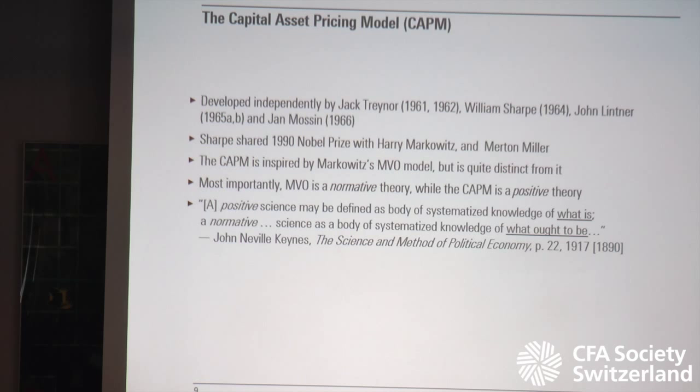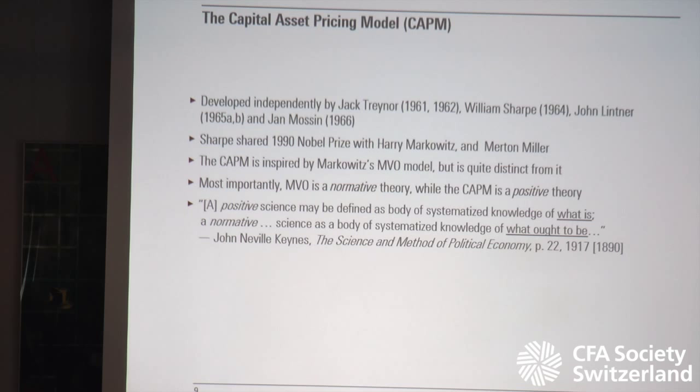Another approach, quite distinct from mean-variance analysis, is the Capital Asset Pricing Model — the CAPM. It was developed independently by Jack Treynor, William Sharpe, John Lintner, and Jan Mossin, all working in the 1960s off the same ideas. We most associate it with William Sharpe, especially since he was the one among those four who received the Nobel Prize, which he shared with Markowitz and Miller. The CAPM is certainly inspired by the Markowitz mean-variance optimization model, but it's quite distinct from it.